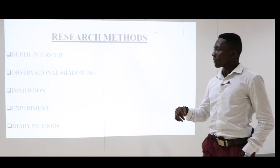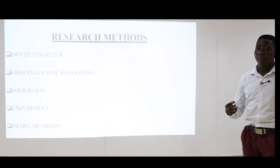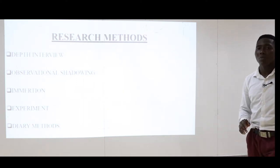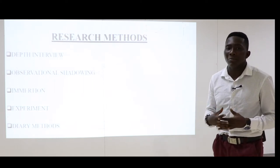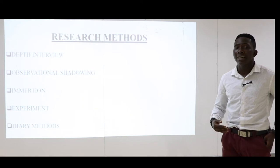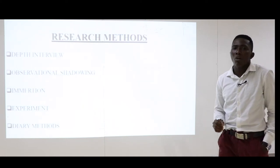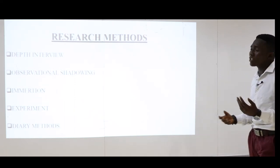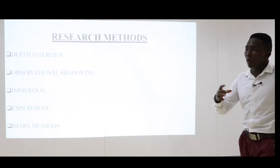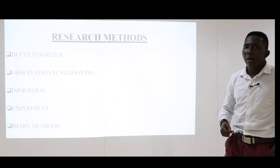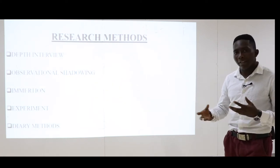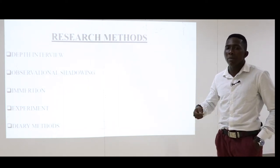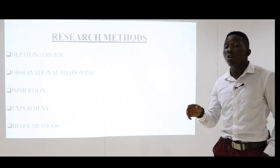From observational shadowing you get to know more about the effects and causes of the problem. With immersion, the researcher truly empathizes with the problem and the people by immersing himself in their situation — being in their shoes — to feel the pain and gain of what those people are going through. With the experiment method, general observations are made, then a prototype or mechanization is formed, and through this they collect results on how people use it to solve problems.